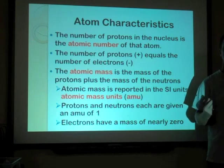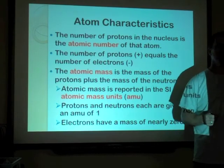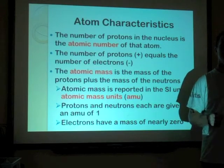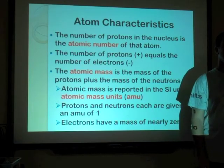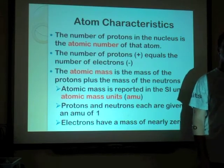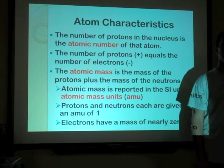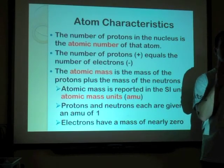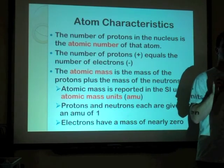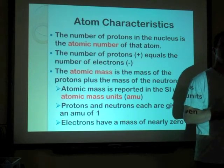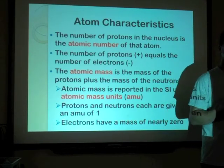Protons and neutrons are each given an AMU of one. Hydrogen has one proton and one electron — so what's its atomic mass? Just one, because we don't count the electrons. If we had an atom with three protons and three neutrons, the atomic mass would be six, because the neutron and proton weigh the same. A simple way to remember it: we only get the weight from what's in the nucleus — protons and neutrons. When we add the protons and neutrons together, we get the atomic mass.